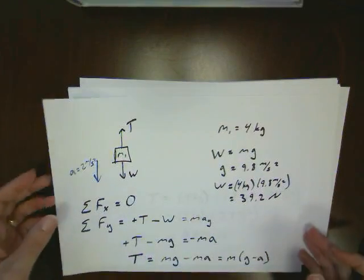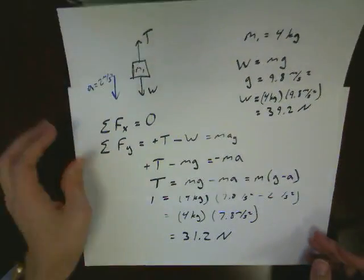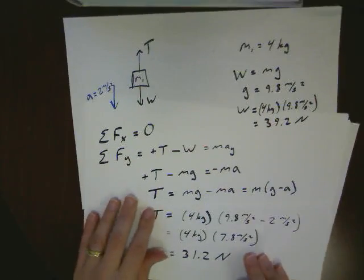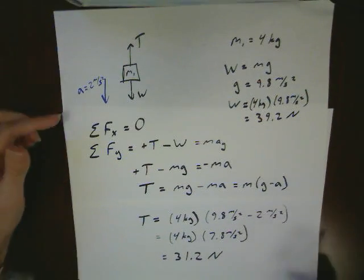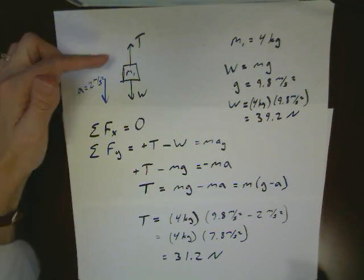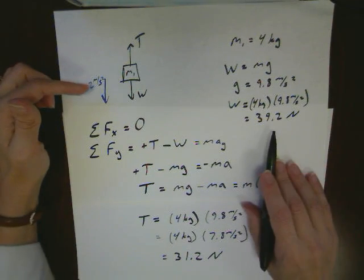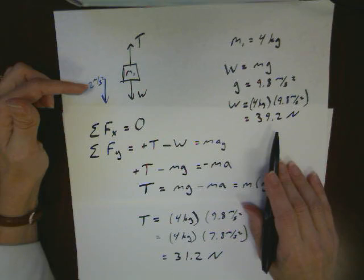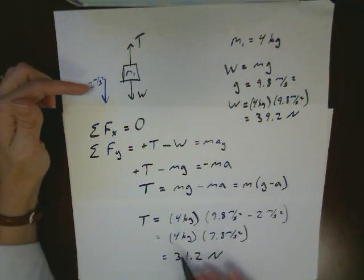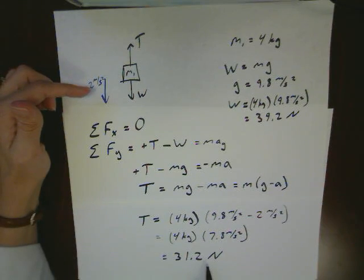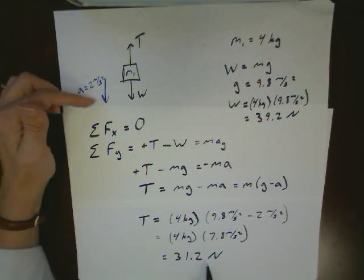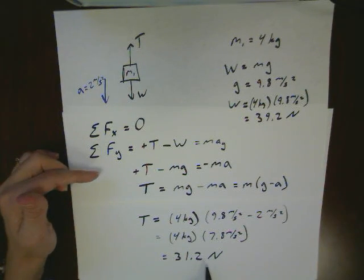So as a check back here to reality, what I'm saying is if my object is accelerating downwards as it's being held up by the rope, the tension of the rope doesn't have to support the entire weight, as would be the case if it was in equilibrium. Instead, the tension only has to support part of the weight, and the other part of the weight is causing a downward acceleration.